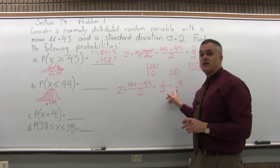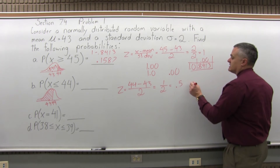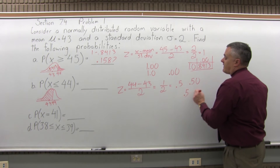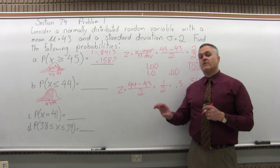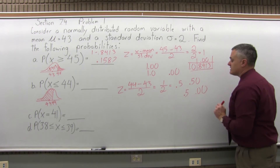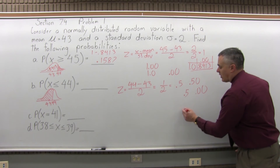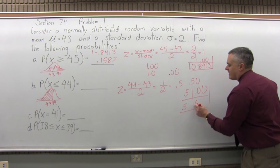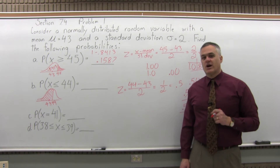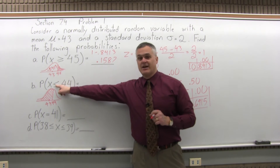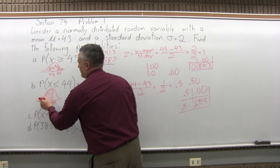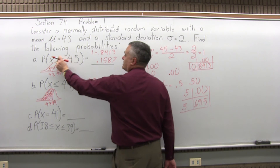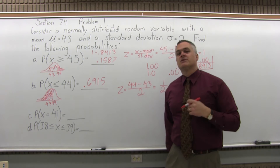Now look up positive 0.5. Write it as 0.50 so it has two decimal places, then split into 0.5 and 0.00. Go to the positive 0.5 row and the 0.00 column — they intersect at 0.6915. Since the question asked for less than, and the chart is set up to show less than, the answer is just 0.6915 directly. Notice: Part A required 1 minus the chart value because it was a greater-than question; Part B uses the chart value as-is because it's a less-than question.